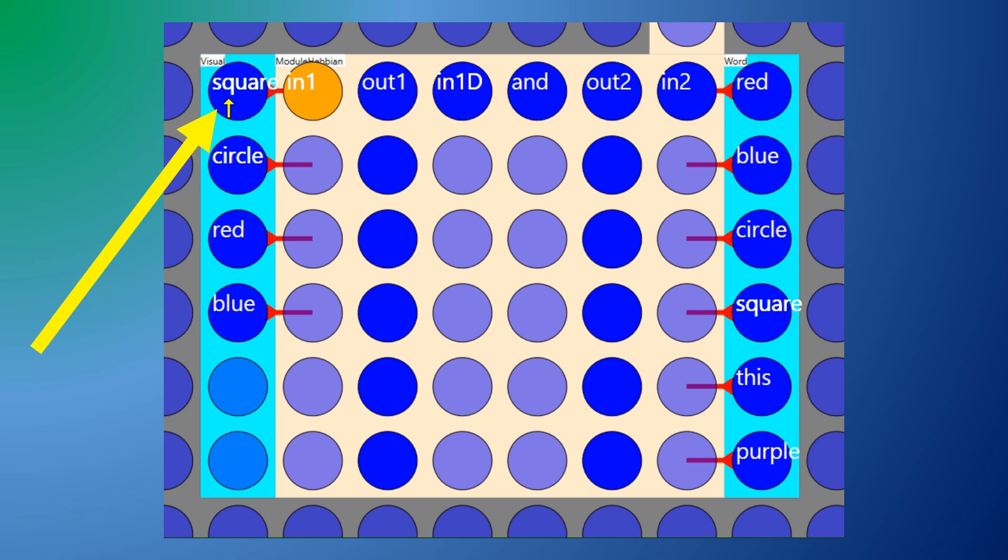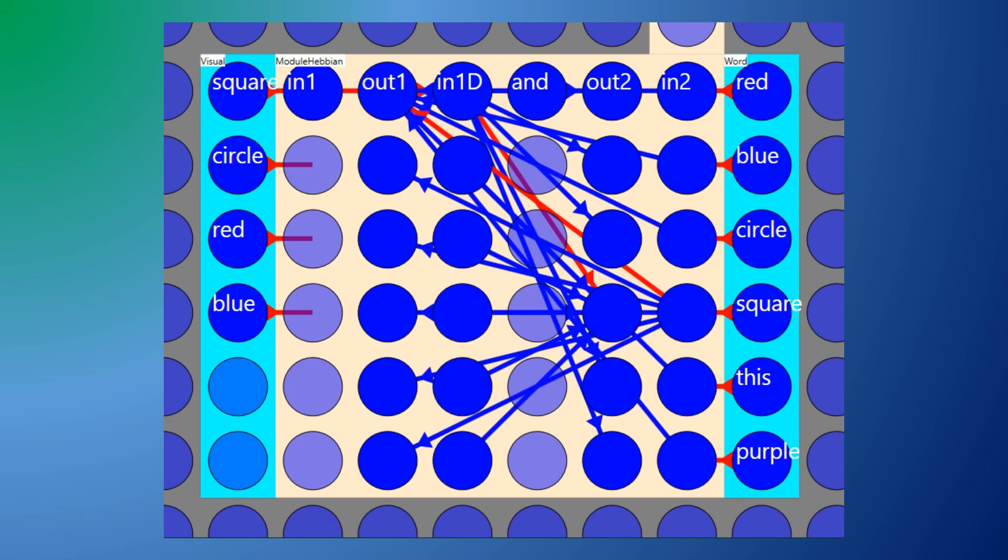Now if I fire one neuron labeled square the corresponding output fires and the connection is two-way. I can also see the synaptic connections which were created.